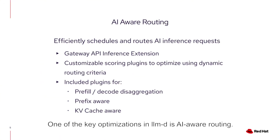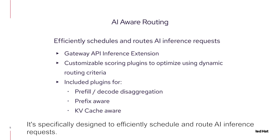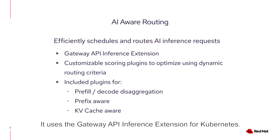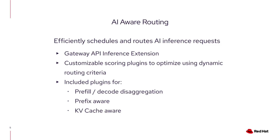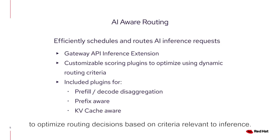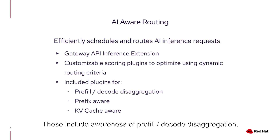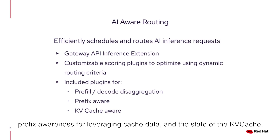One of the key optimizations in LLMD is AI-aware routing. It's specifically designed to efficiently schedule and route AI inference requests, using the Gateway API inference extension for Kubernetes. What makes it AI-aware is its ability to use customizable scoring plugins to optimize routing decisions based on criteria relevant to inference, including awareness of pre-fill and decode disaggregation, prefix awareness for leveraging cache data, and the state of the KVCache.